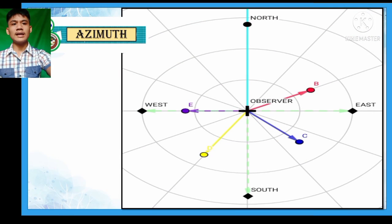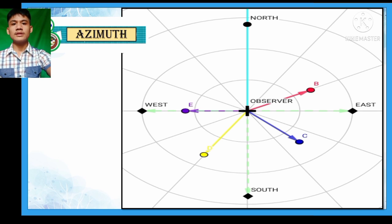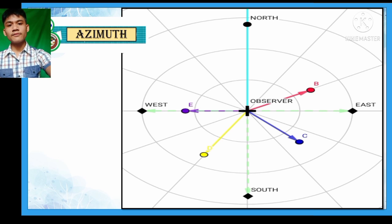This is what an azimuth setup looks like. We have the north, the observer, the east, south, and west. And B, C, D, and A would be the points of interest. If we were asked what the azimuth value of point B is, we have to connect the observer to point B and then measure the angle formed from the reference direction, which is the north.